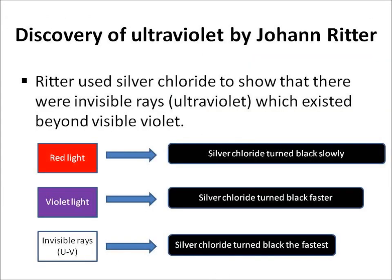A scientist called Johann Ritter discovered ultraviolet in a similar manner. He used something called silver chloride to find out that UV existed. Silver chloride, when red light was shone on it, turned black but quite slowly. When Ritter shone violet light on silver chloride it turned black faster.